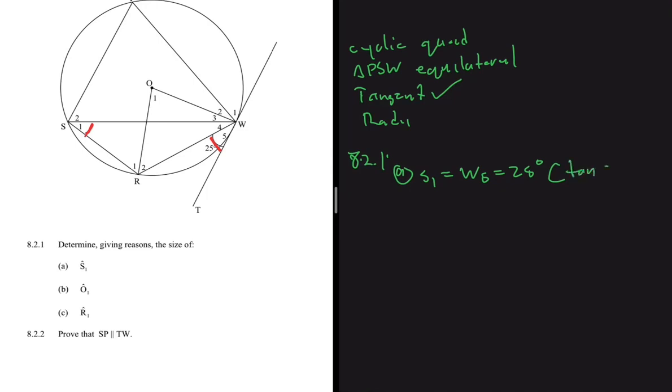Let's move to part b. It says let's find o1. Again, we're not thinking about anything else other than the four keywords we have. Cyclic quad: there's no immediate connection between o1 and the cyclic quad angle. Triangle PSW: o1 is not an angle on PSW, so it cannot help us. Tangent: o1 is at the center of a circle, there's no immediate way that is connected to a tangent because usually when we're talking about tangent we're talking about the tangent chord theorem. The only option we're left with is radii.